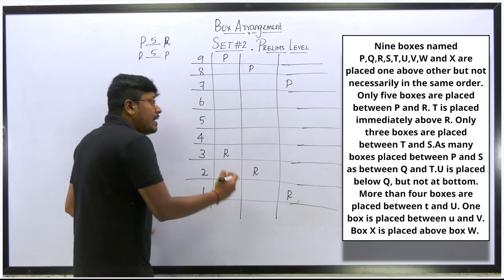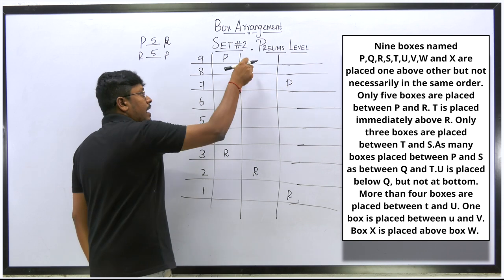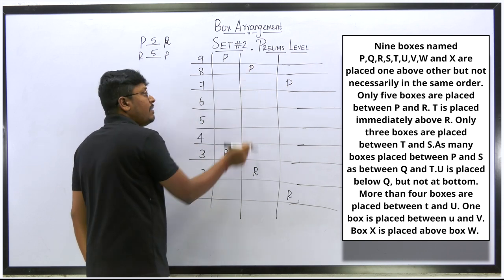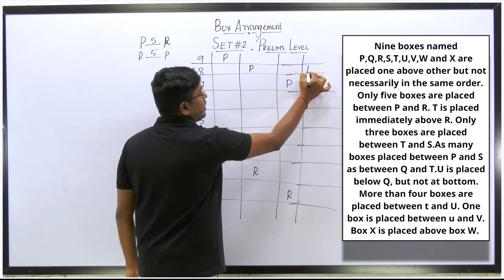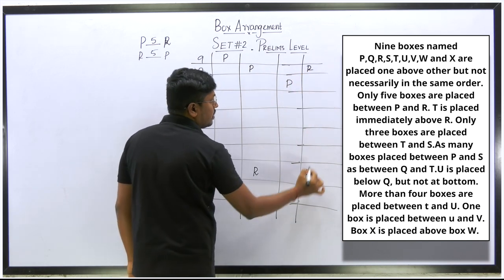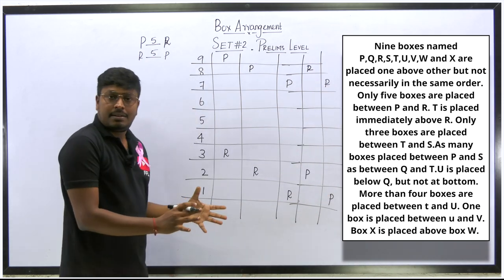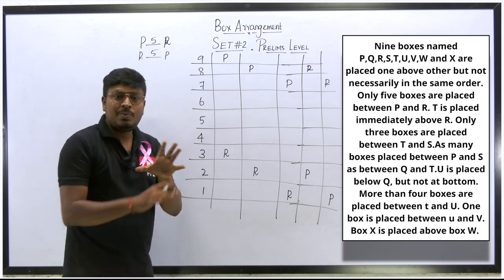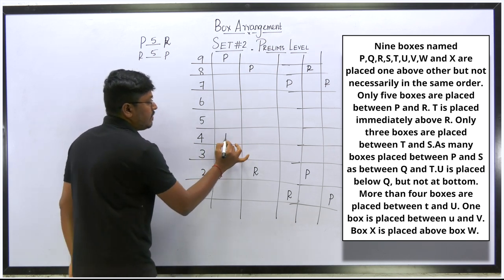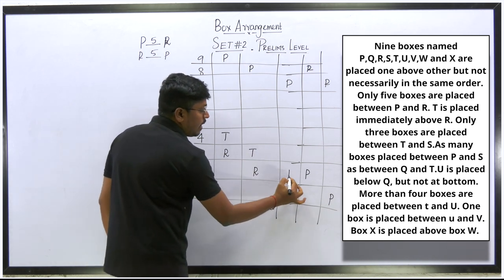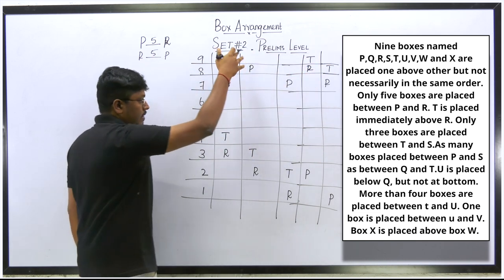We already know T is placed immediately above R, so we fix T just above R in each diagram. There's also another possible direction: R can be below P, or P below R — meaning we can also draw diagrams where R is at a lower position and P is higher. So we have multiple possible diagrams, but reading the next clue will help us eliminate most of them.